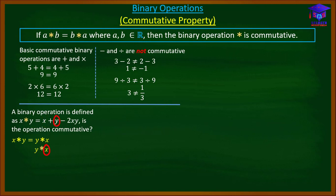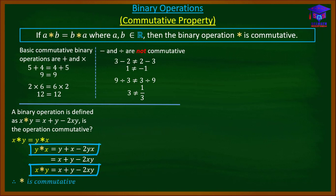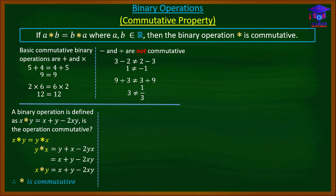So y★x gives us y + x − 2yx. Since addition is commutative, this is the same as x + y − 2xy, which is exactly x★y. Since x★y equals y★x, we conclude that the operation star is commutative.